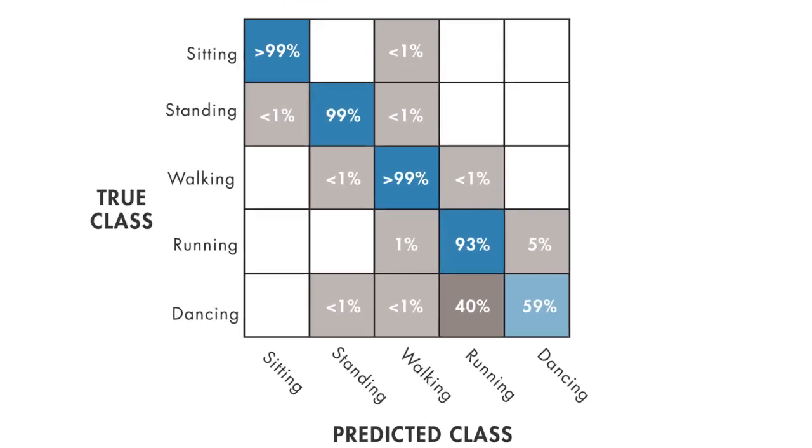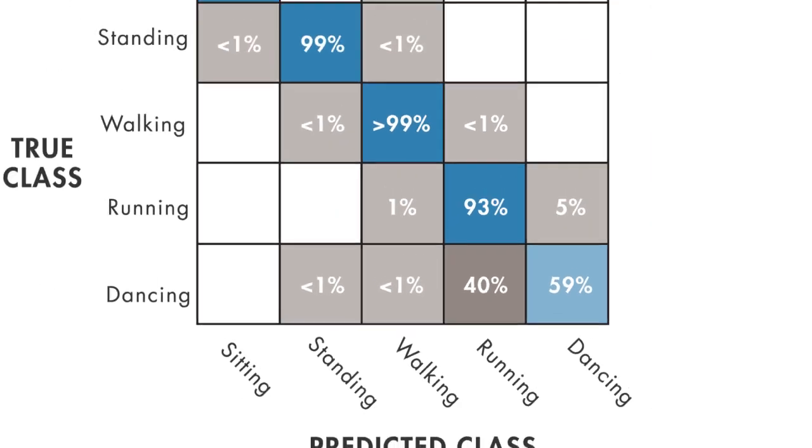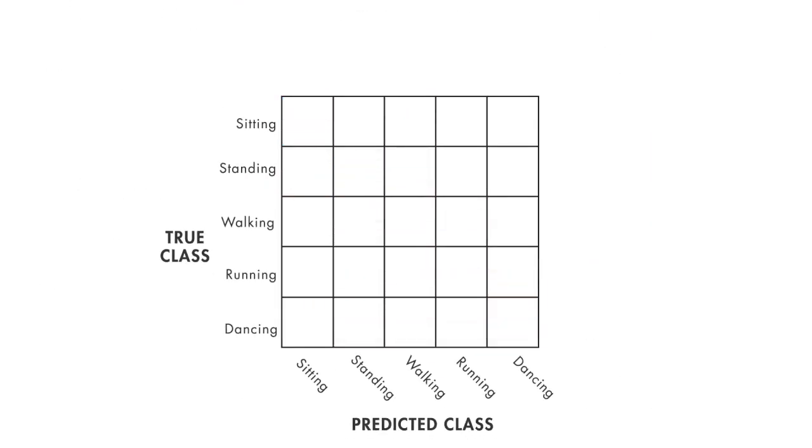The confusion matrix shows that our model is having trouble distinguishing between dancing and running. Maybe a decision tree doesn't work well for this type of data. We'll try something else.